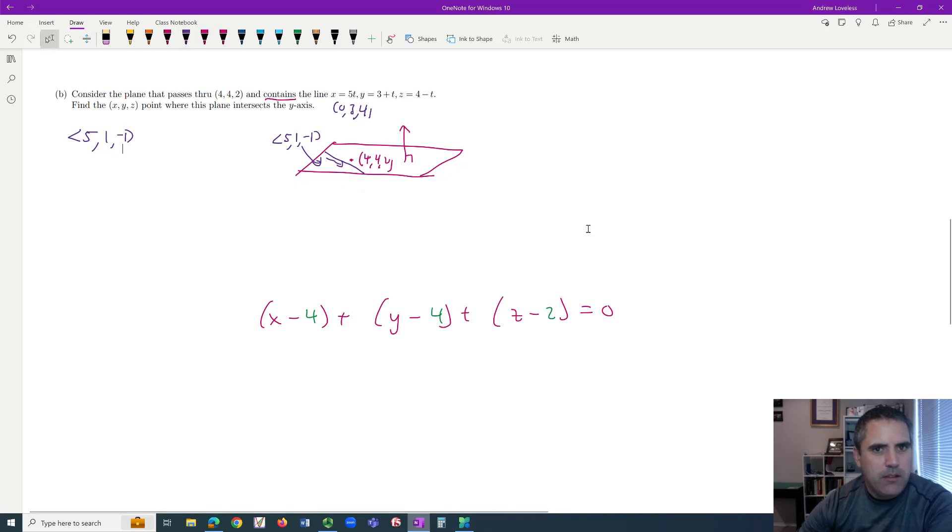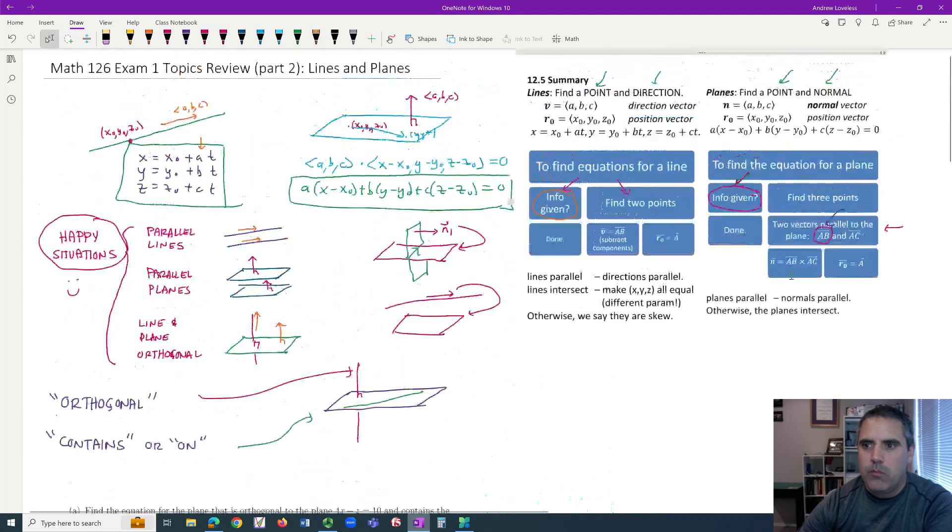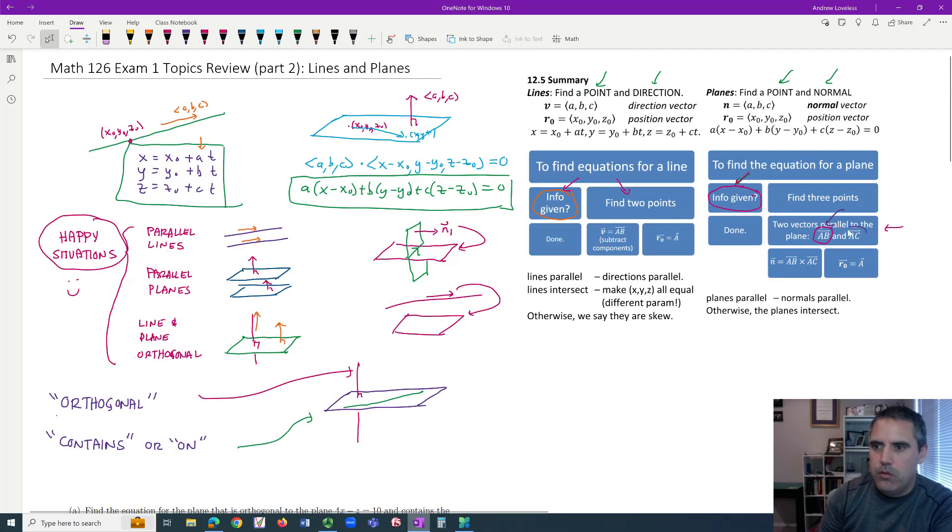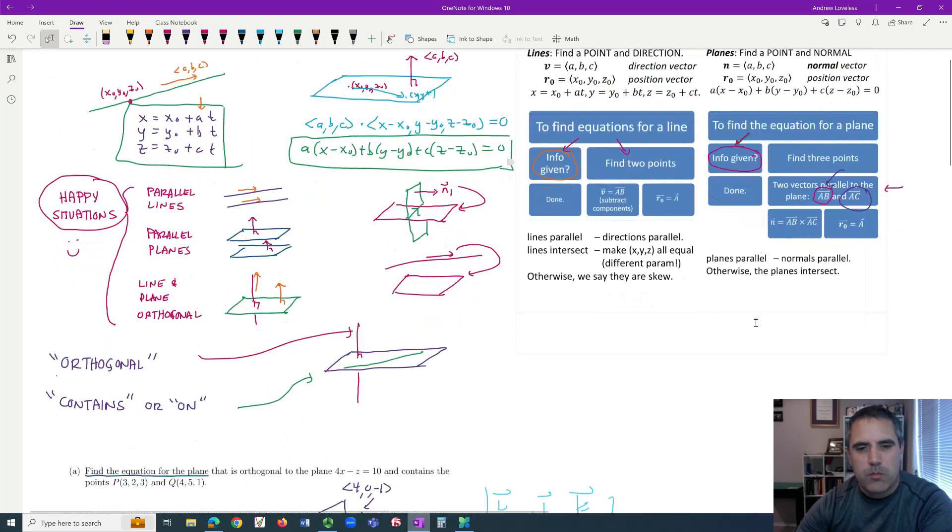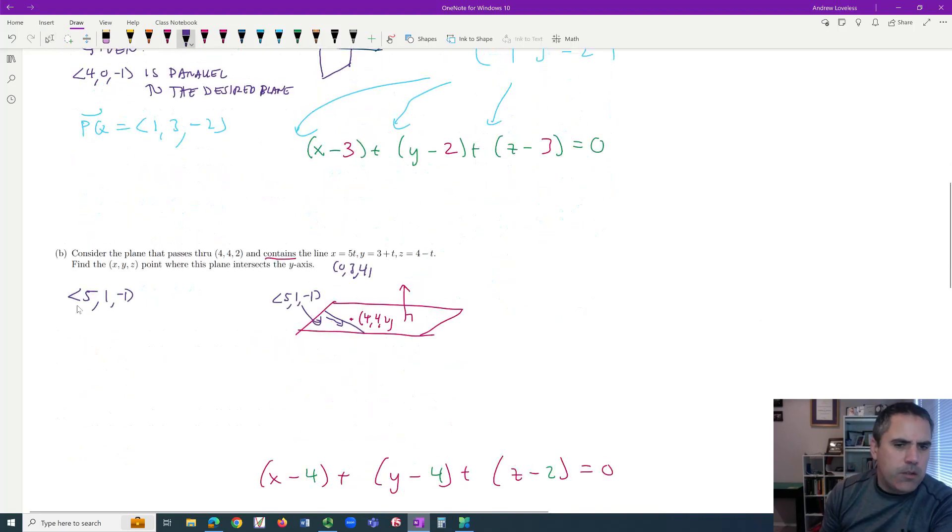Okay. So we're down to this part where we're stuck. We need another vector on the plane. Can I do it? Well, it sure would be nice if I had another point. I do. That's it. So let's call this P. Let's call this Q. And this ends up being very similar to the last problem.